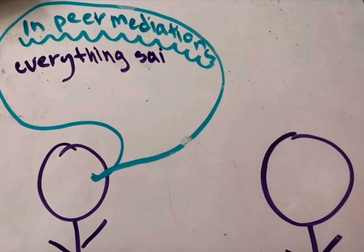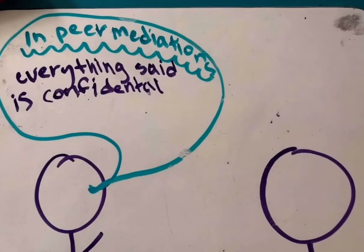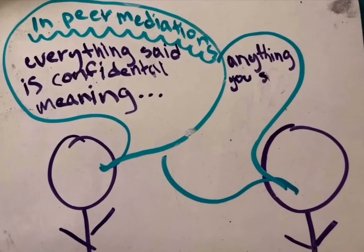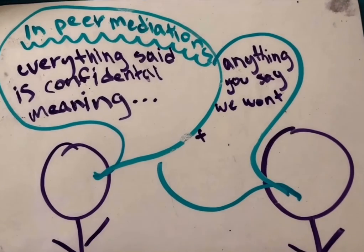In a peer mediation, anything that is said is confidential, meaning we can't tell anyone what happens unless it has something to do with violence, sexual assault, or suicide.